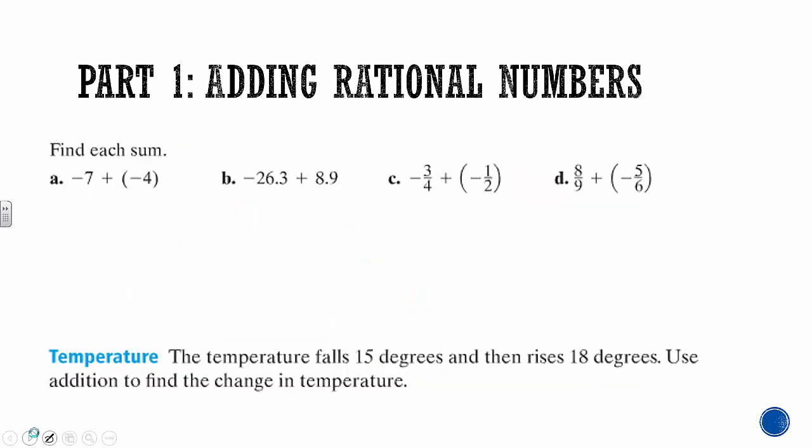Find each sum. Negative 7 plus negative 4: both numbers are negative, so we know our answer is also going to be negative. Think about it — you're 7 in the hole and you're going to take away 4 more. We add our two absolute values: 7 plus 4 gives us 11, so the answer is negative 11.